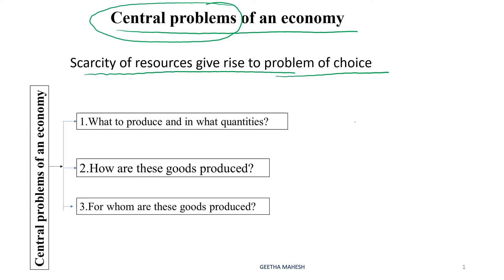The central problems of an economy can be divided into three divisions. First one is what to produce and in what quantities. Second one is how are these goods produced. The third one is for whom are these goods produced — that means what to produce, how to produce, and for whom to produce.